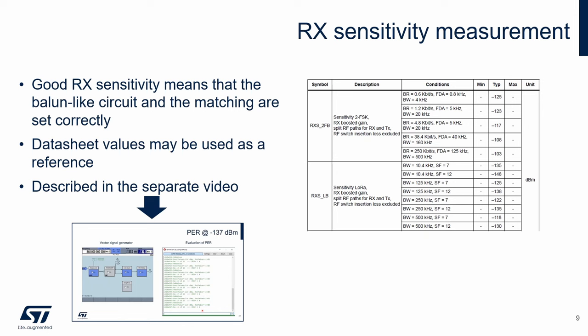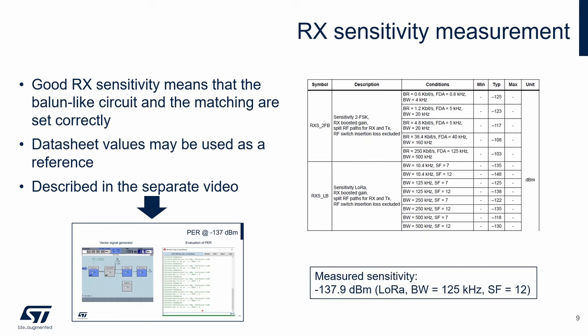Sensitivity measurement is quite complex. A simplified variant of sensitivity measurement is shown in a separate video of this series named 'basic RF measurements.' On our test board, this sensitivity was measured using LoRa modulation with these parameters. If we compare this value with the reference one in the datasheet, our receiver path is set correctly.